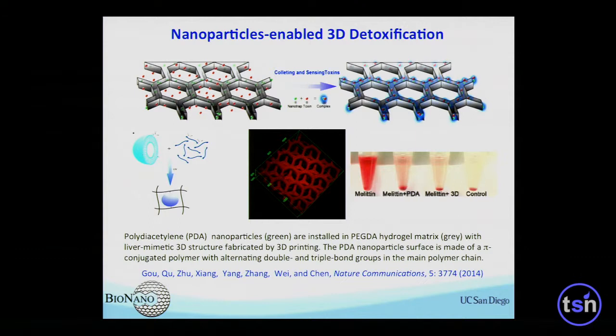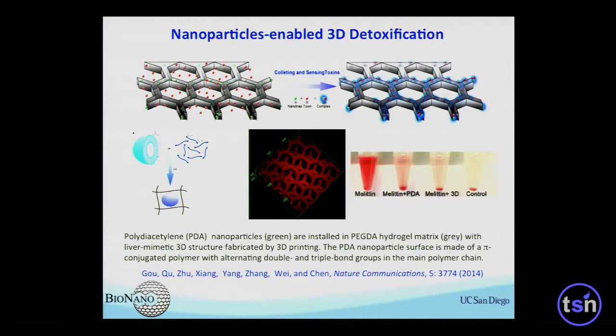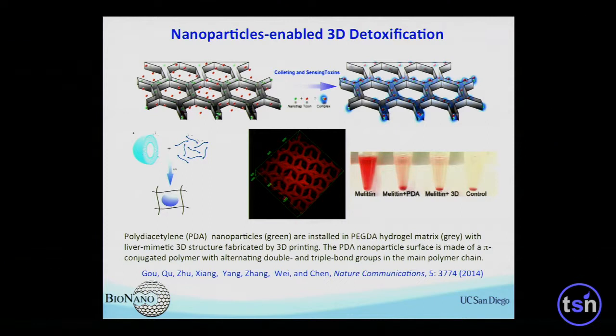We can also encapsulate functional nanoparticles in the hydrogels when you print it — those particles are encapsulated during this photopolymerization process. In a specific case we published recently, we put in palladium nanoparticles. Those particles can attract and trap melatonin in solution. From an observation standpoint, once they have bound together, this transparent hydrogel becomes red — a very nice tool to observe how melatonin is removed by this nanoparticle-encapsulated hydrogel.